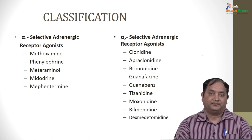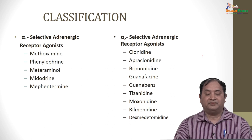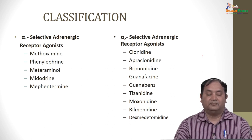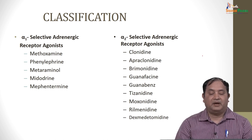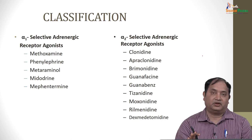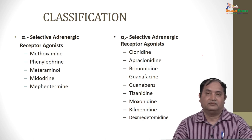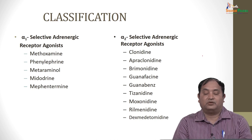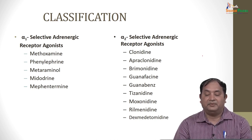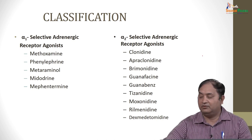Let us classify sympathomimetics. Alpha 1 selective adrenergic receptor agonists include methoxamine, phenylephrine, metaraminol, and midodrine. Alpha 2 selective adrenergic receptor agonists include clonidine, apraclonidine, brimonidine, guanfacine, guanabenz, tizanidine, and moxonidine. There are various examples of alpha 1 and alpha 2 agonists.